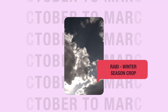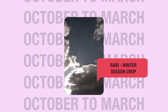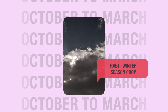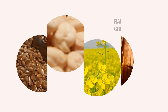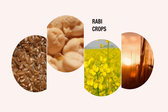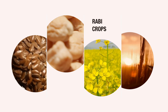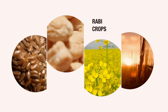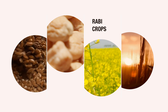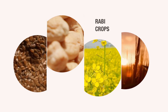The second are the Rabi crops, which are grown in the winter season, typically from October to March. Rabi crops include wheat, gram, pea, mustard and linseed. Apart from these, there are several pulses and vegetables which are grown during summer at many places.